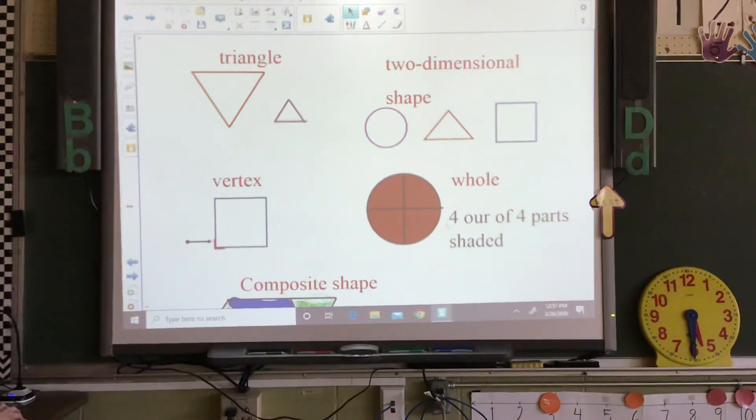The next one is whole. The entire amount or all of the parts. Four out of four parts shaded. Now kids, you'll laugh at this because this is one of my mistakes that I make that I have to correct in front of you. Four out of four parts shaded. So that's the whole thing is shaded.